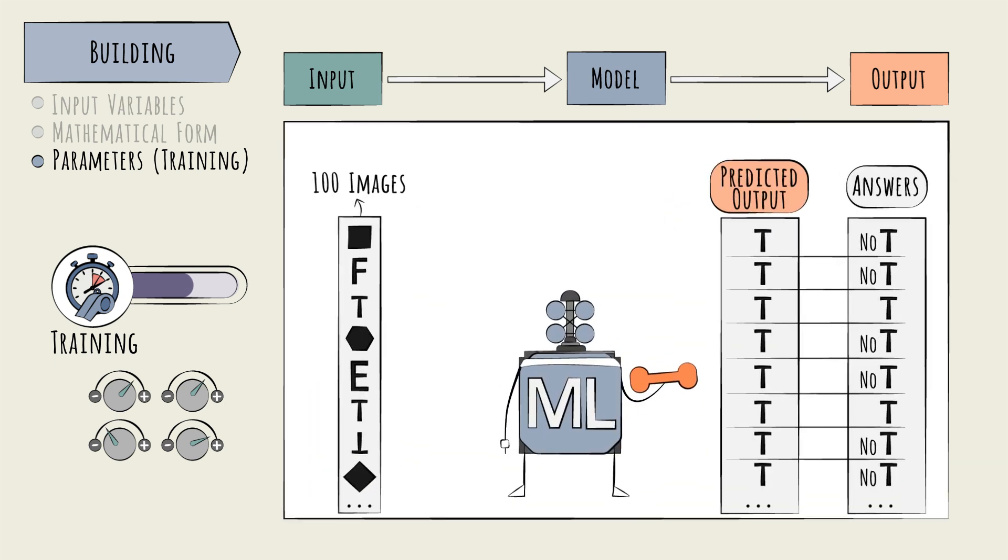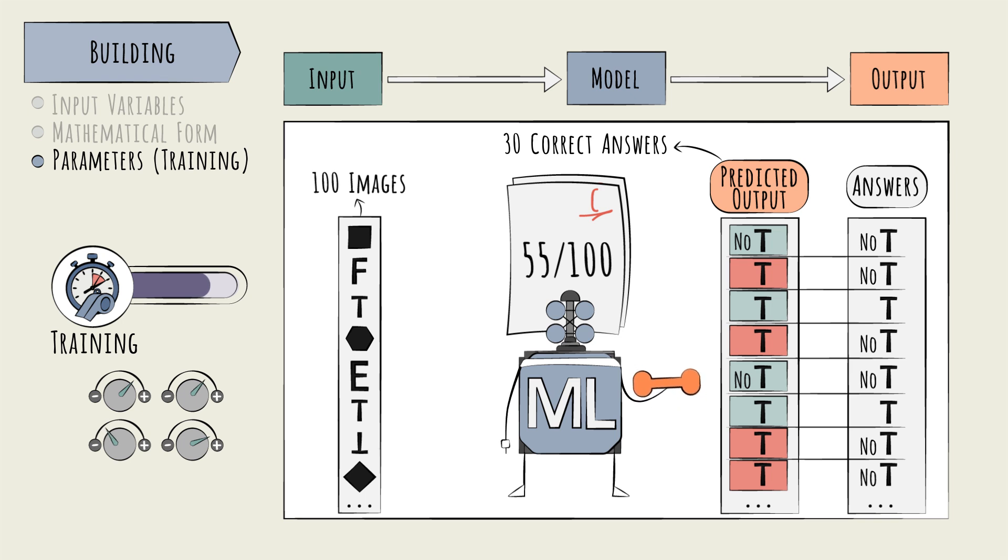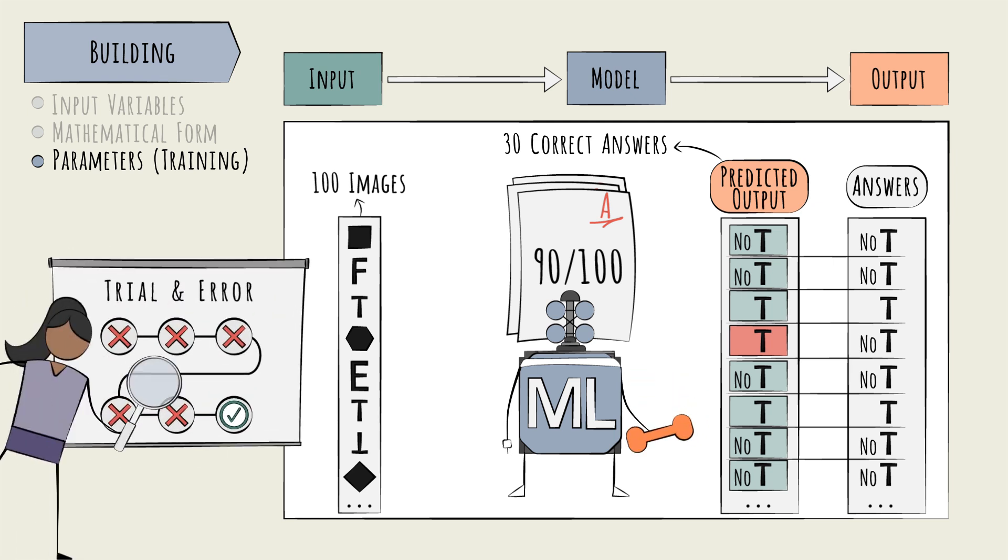Say we fed it 100 images and it got 30 right. This is a 30% accuracy rate. We can then tweak the weight values, i.e. the parameters, until this accuracy rate is optimized. There are many algorithms that can be used to do this tweaking, but all of them work iteratively, via some form of trial and error. This topic gets deep quickly. Training algorithms are a major research focus and beyond our scope here.